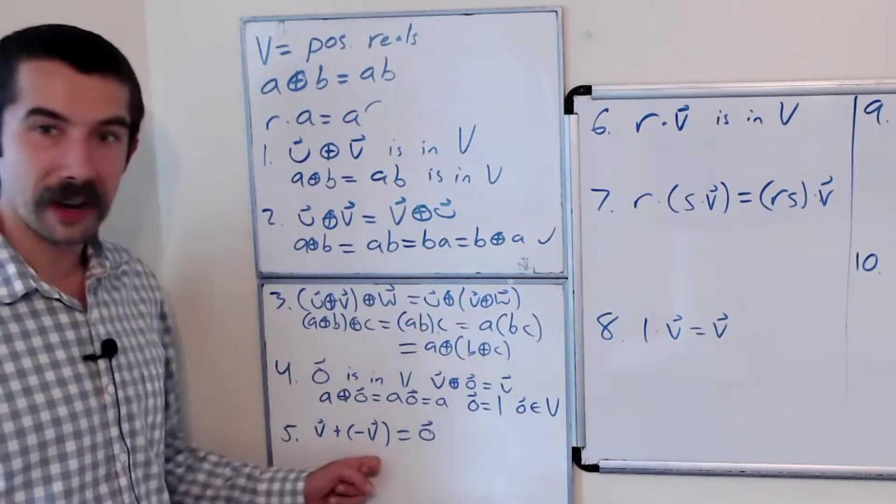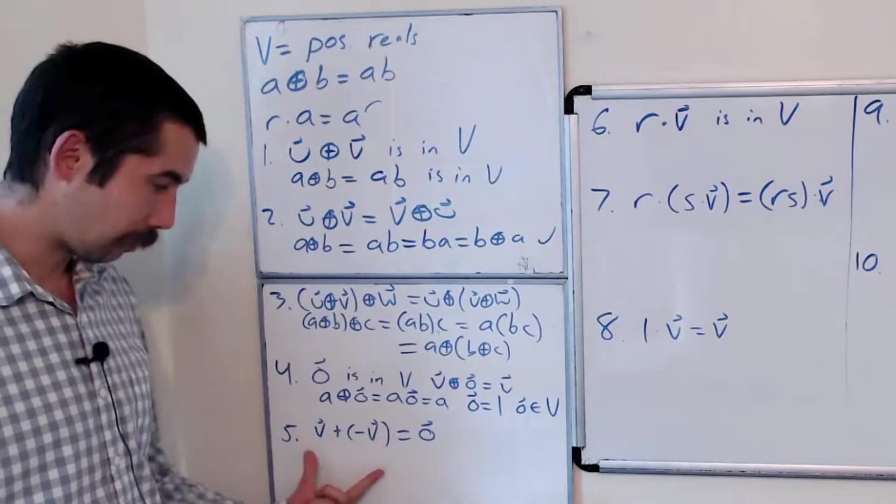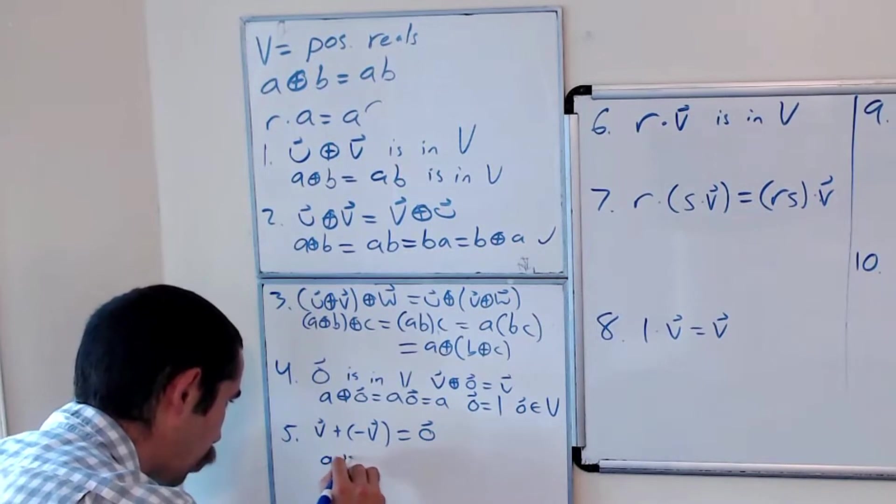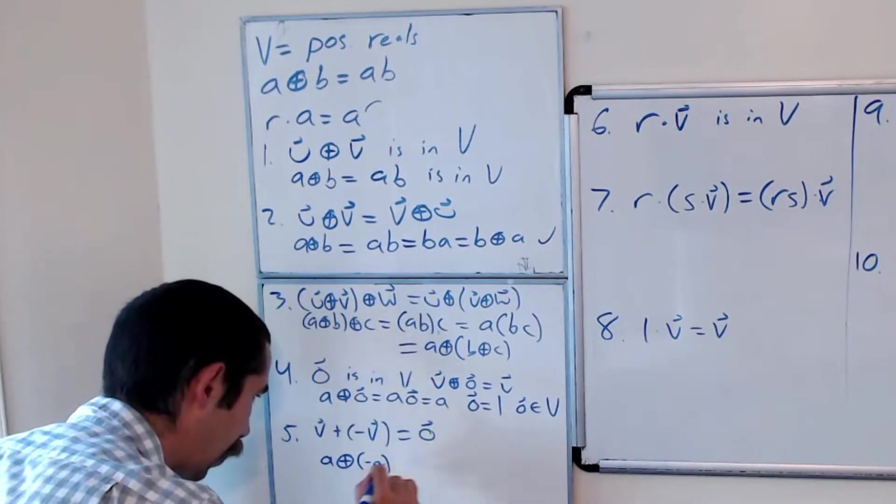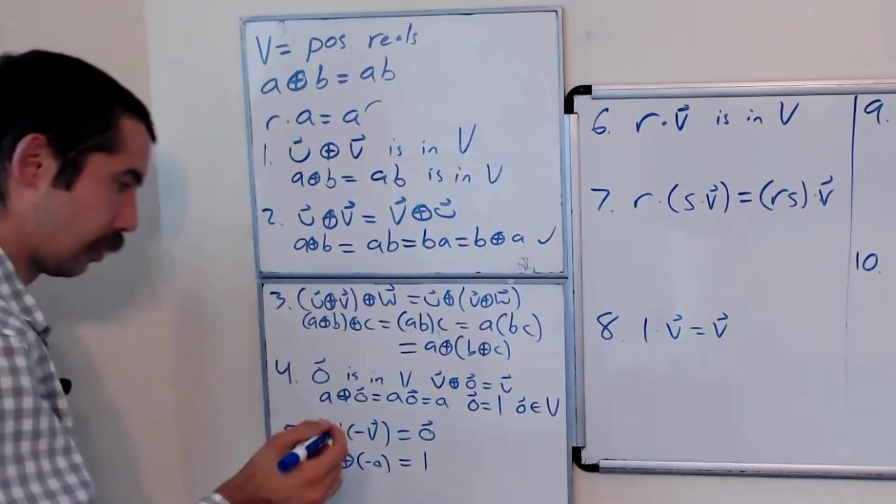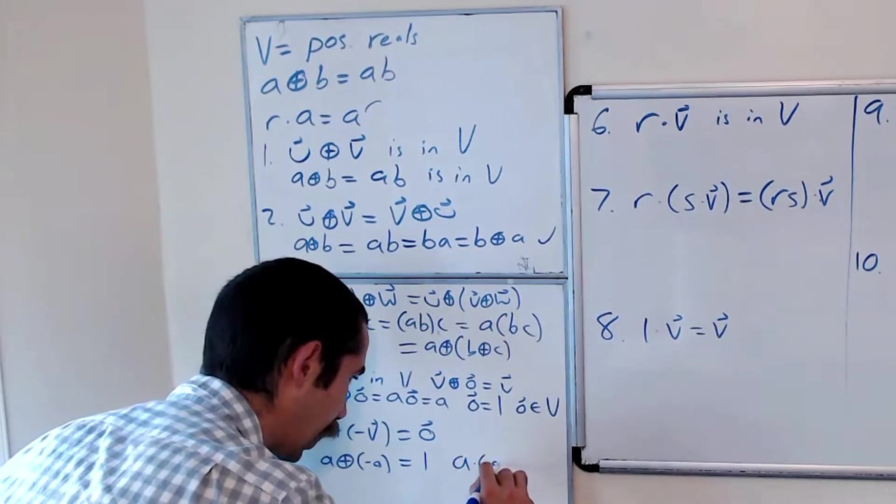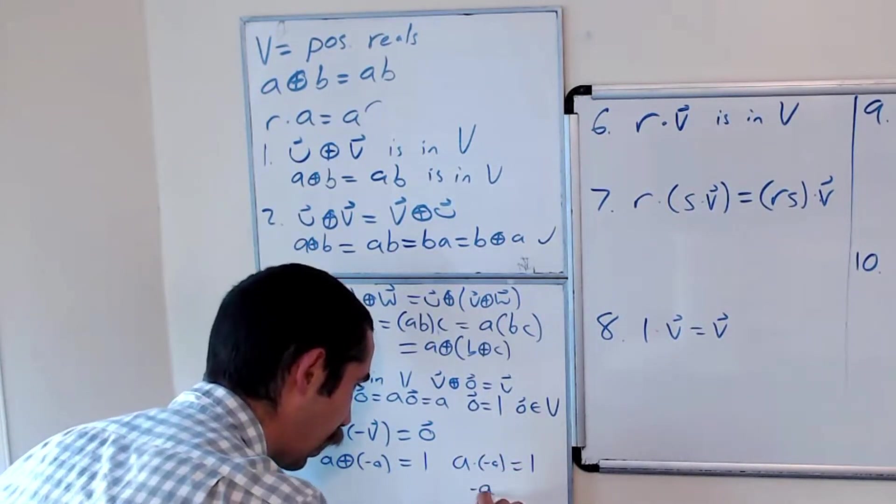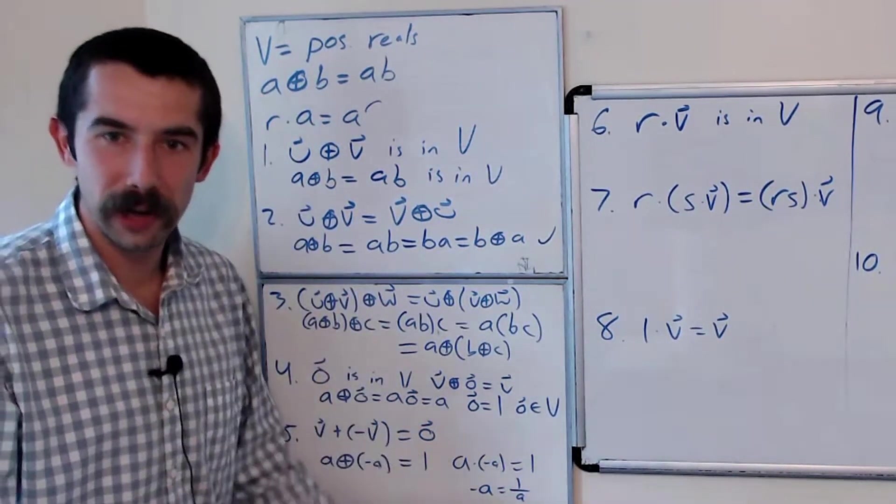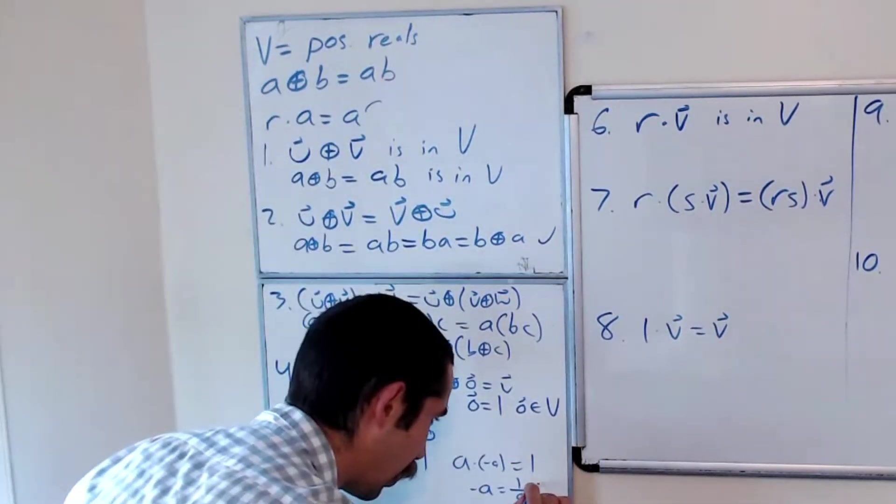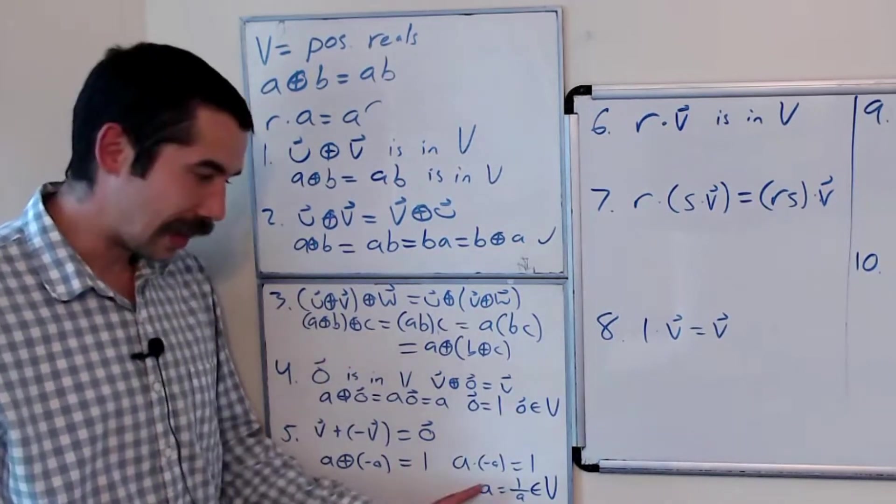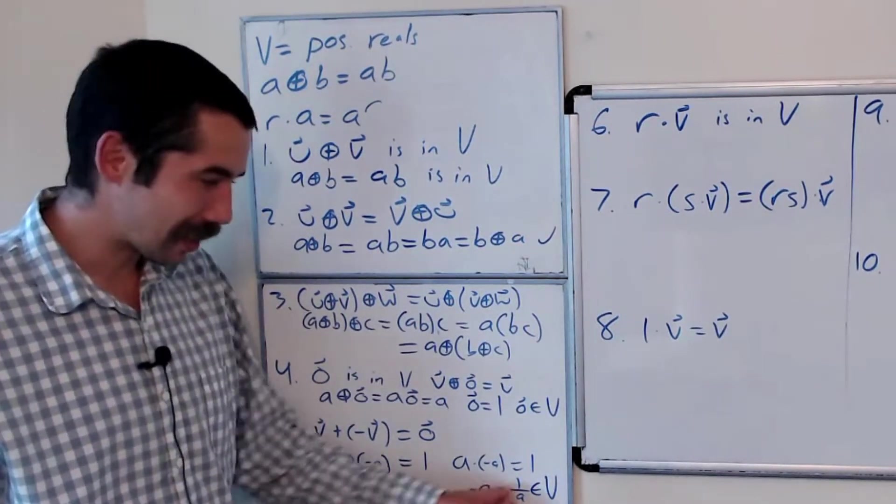Now we want V plus there should be a vector negative V. We add these together to give us zero. So let's figure out what that's supposed to be. So A plus negative A is supposed to give us the zero vector, which is one. And so that's saying A times negative A is equal to one. And so that's saying negative A is equal to one over A. If A is a positive real number, one over A is also a positive real number. So this is in V. So the negative of one of our positive real numbers is its reciprocal.